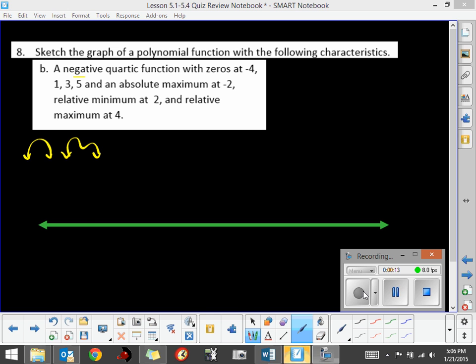We also want to put on every location of the zeros. So there's a negative 4 that crosses the x-axis, 1, 3, and 5. These are the zeros. This is where it has to cross the x-axis. The zeros are your x-intercepts. The green line represents my x-axis.